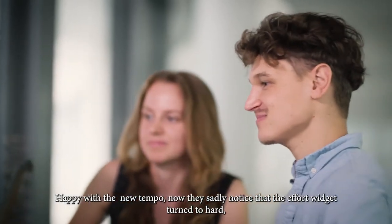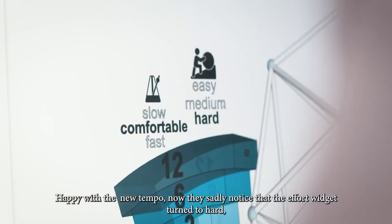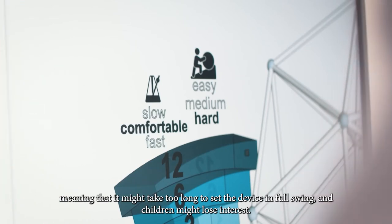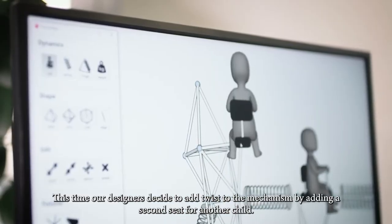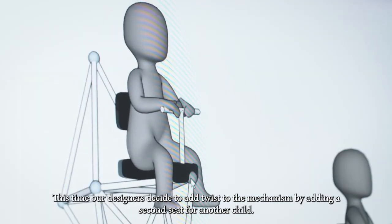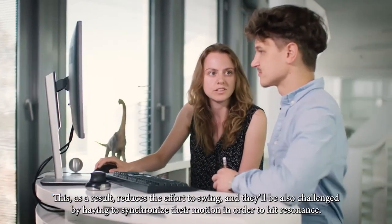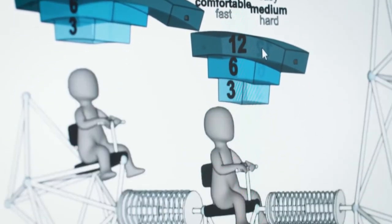Designers happy with the new tempo, now they sadly noticed that the effort widget turned too hard, meaning that it might take too long to set the device in full swing and children might lose interest. This time, our designers decide to add a twist to the mechanism by adding a second seat for another child. This, as a result, reduces the effort to swing and they will also be challenged by having to synchronize their motion in order to hit resonance.